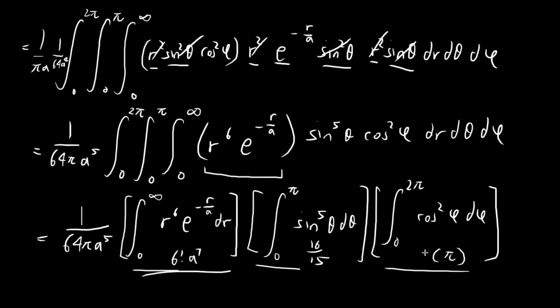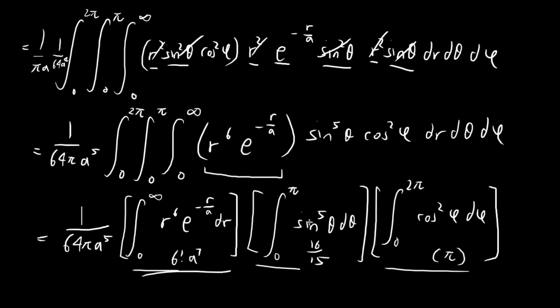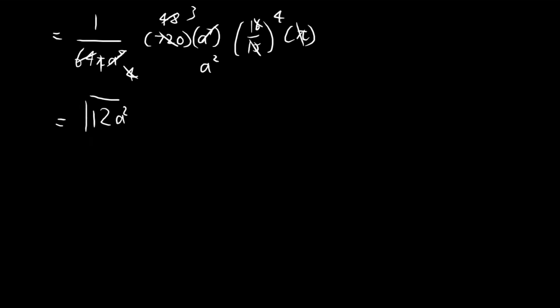Now we combine everything. The expected value of x squared equals 1 over 64π·a⁵, times 720·a⁷ (since 6! = 720), times 16/15, times π. The π cancels, and the a terms combine to give a². From 720/64 times 16/15, simplifying: 720/15 = 48, then 48 times 16/64 = 48/4 = 12. So the expected value of x squared equals 12a².